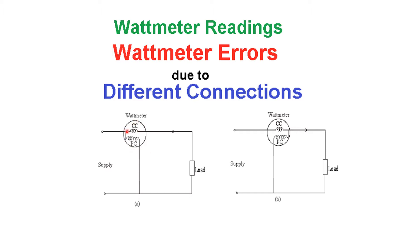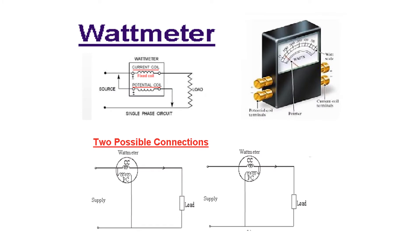We have a current coil and a potential coil. This is the load and this is the supply. In the first arrangement, the potential coil is connected before the current coil, whereas in the second case it is connected after the current coil. The wattmeter has potential terminals and current coil terminals, as shown here.